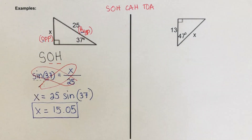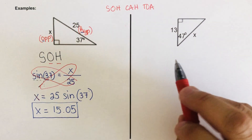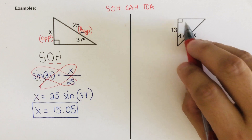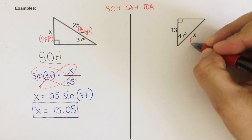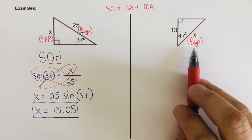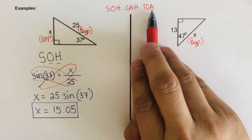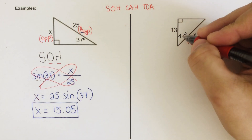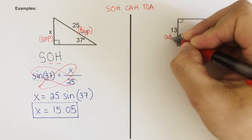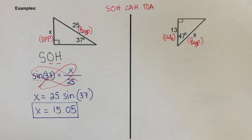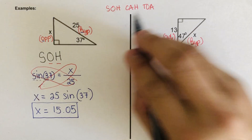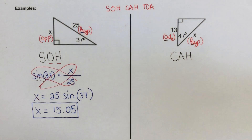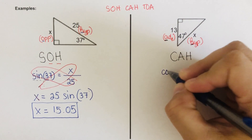Now let's move on to the third example. It's very important to label the parts. From 47 degrees, we know the longest side across the 90-degree angle is always the hypotenuse, so I label that as H. The possible options are SOH or CAH, since TOA doesn't involve the hypotenuse. The side of length 13 is adjacent from 47 degrees, so I label it as adjacent. We have a combination of adjacent and hypotenuse, so we are going to use CAH.